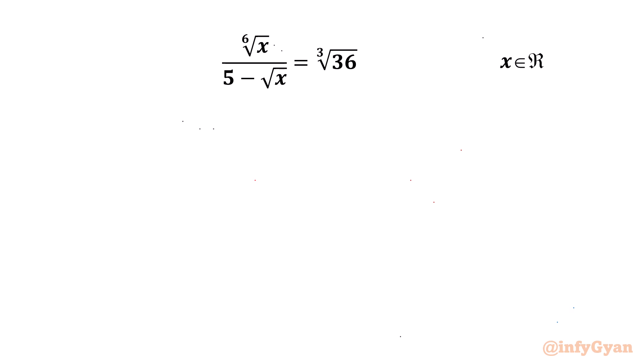Hello my dear friends, welcome back to InfiGyan. In this video we have one very interesting question from Radical Equations: 6th root of x over (5 minus square root x) equal to cube root of 36. And we are going to calculate only real solutions.